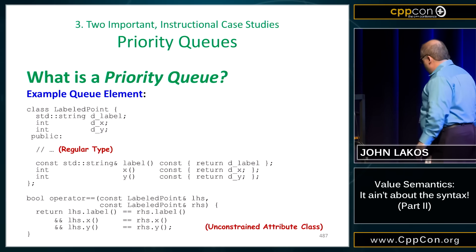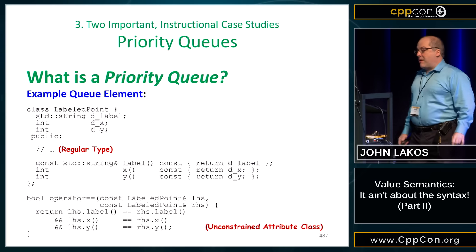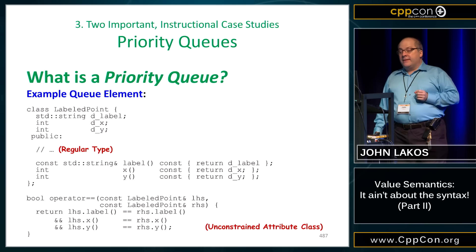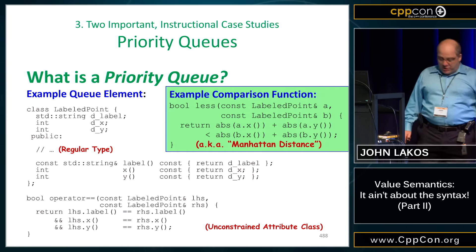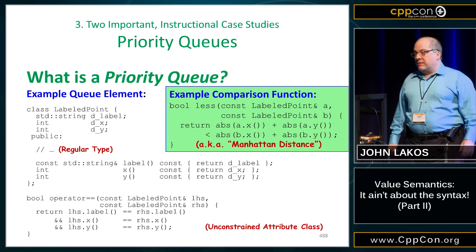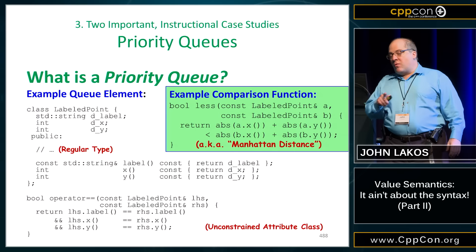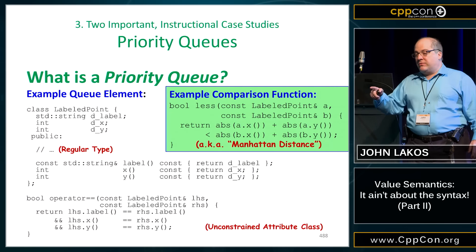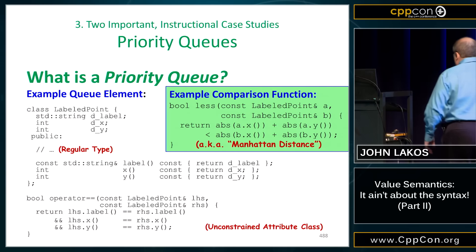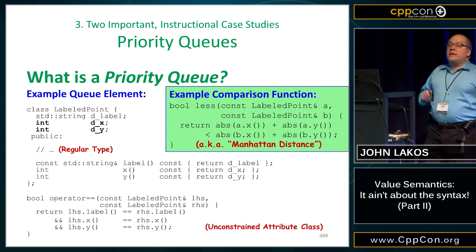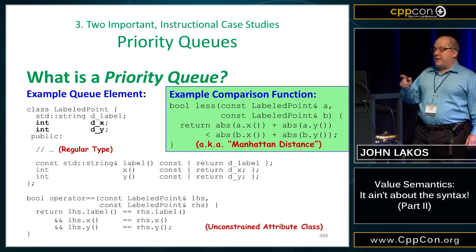Salient operations. We have an example: a labeled point with a string label, and x and y coordinates. We have a cost function that computes the Manhattan distance from the origin — you walk along either the x or y axis, and whether you walk two-x and one-y or one-y and two-x, the distance is the same. That's the priority. The string doesn't play. So the only salient attributes of the labeled point that matter for priority are the x and y coordinates.